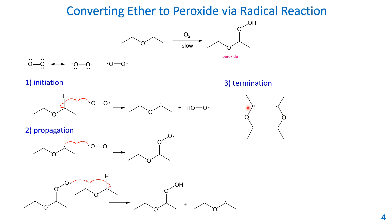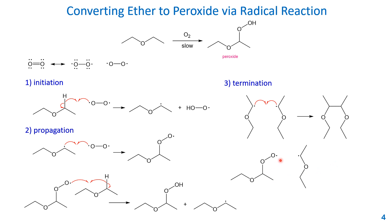Termination involves radical quenching. For example, two alpha radicals can combine to form diethoxybutane. Two different radicals can also combine to form another type of peroxide. These peroxides are very explosive — that's the safety issue. That's all I want to cover about radical reactions. If you have any questions, please let me know. Good luck.